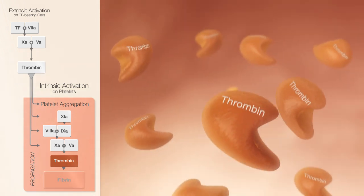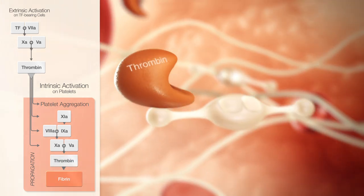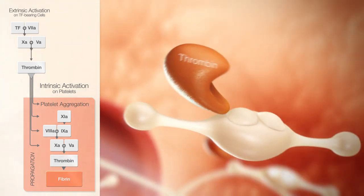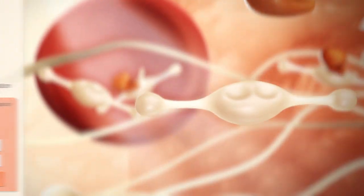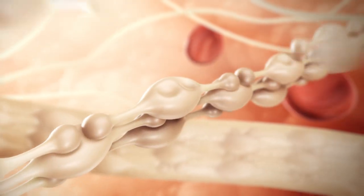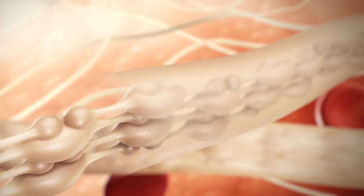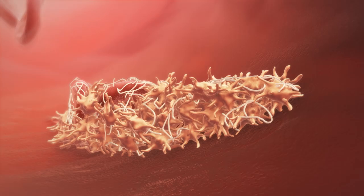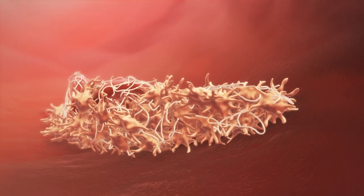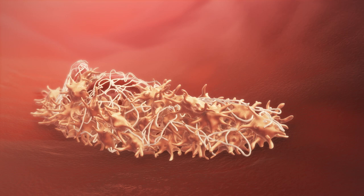Finally, thrombin converts fibrinogen into fibrin that then forms fibers cross-linked through the action of factor 13. This stabilizes the developing clot.